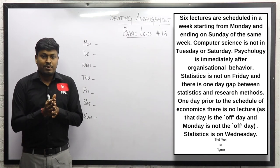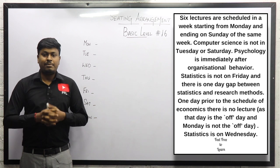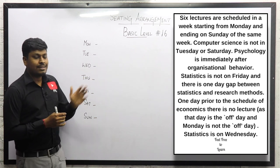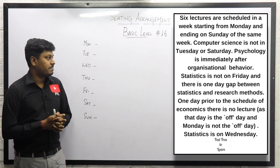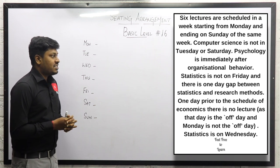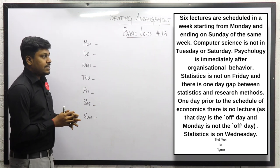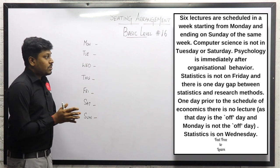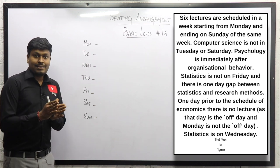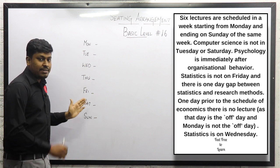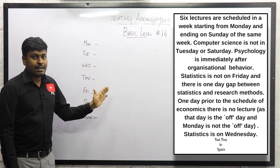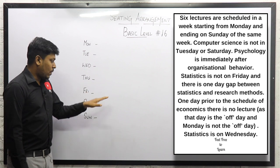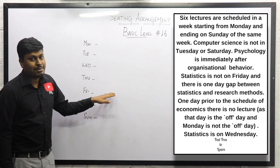Thanks for being here on my YouTube channel. Now let me move on to basic level arrangement number 16. Six lectures are scheduled in a week, starting from Monday and ending on Sunday. There are six lectures total, so remember we have seven days but only six lectures are conducted — meaning one day will be an off day with no lecture conducted.